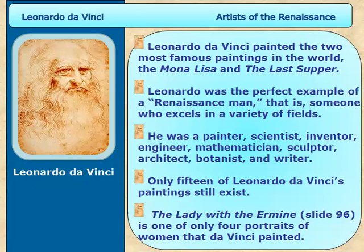Leonardo da Vinci painted two of the most famous paintings in the world: the Mona Lisa and the Last Supper. Leonardo was the perfect example of a Renaissance man — someone who excels in a variety of fields. He was a painter, scientist, inventor, engineer, mathematician, sculptor, architect, botanist, and writer. Unfortunately, only 15 of Leonardo da Vinci's paintings still exist.